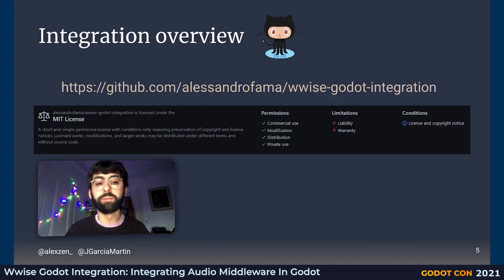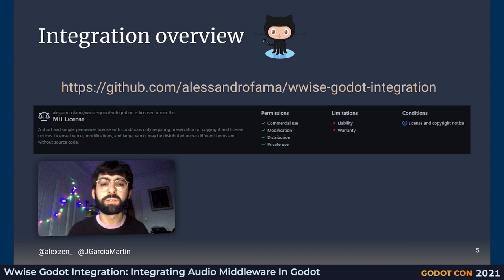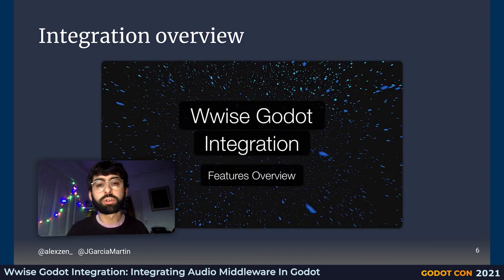AudioKinetic offers commercial and non-commercial licensing for Wwise depending on your project nature and needs. The Wwise integration is already available as a repository on GitHub under this link, so you can download or clone the integration, fork it or freely use it in your projects. The integration is licensed under the MIT license. Please keep in mind that this integration is not meant to replace the Godot audio functionality, but offers an alternative to that.